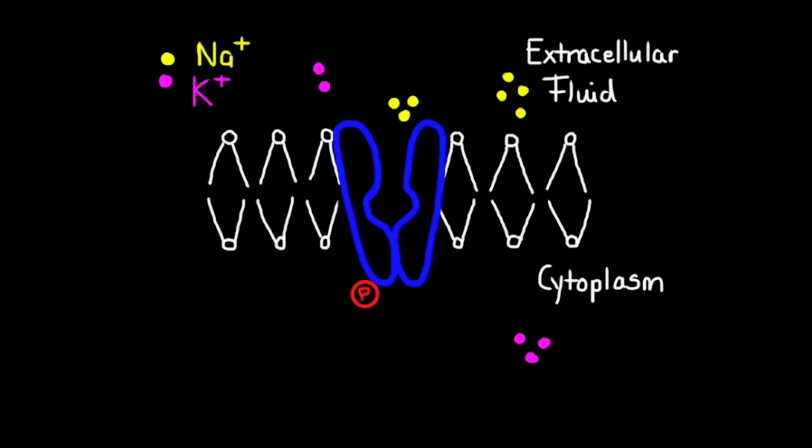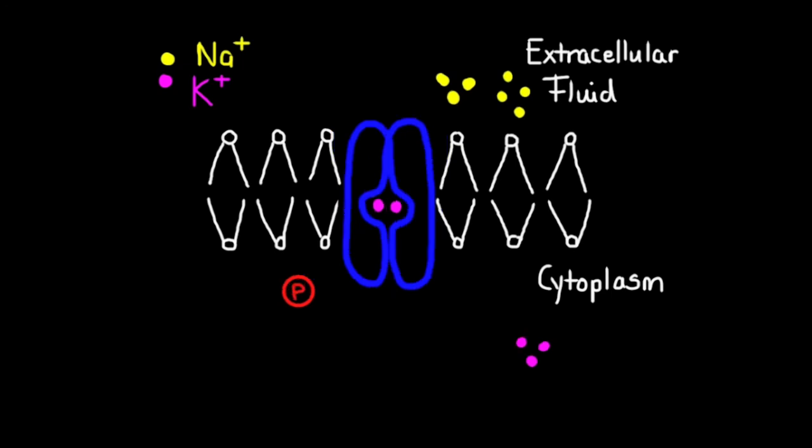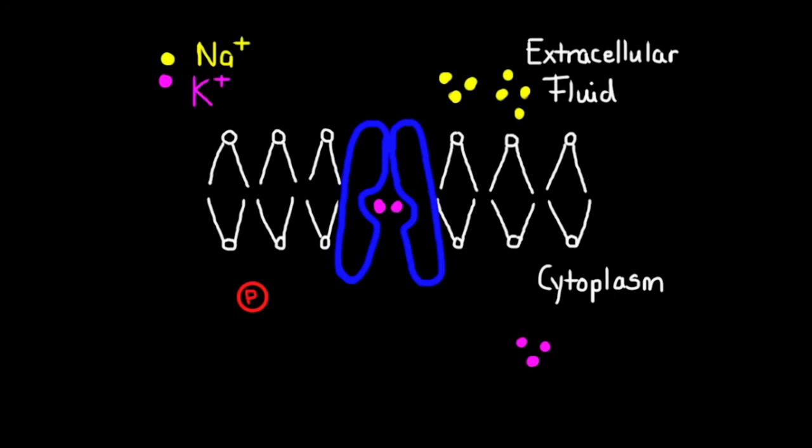The potassium ions then bind to the protein pump once the sodium ions have been released. The binding of the potassium ions to the protein pump results in a conformational shape change which allows the phosphate group previously bound to be released.